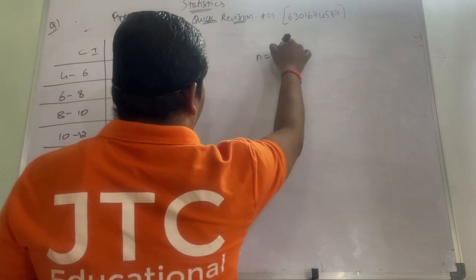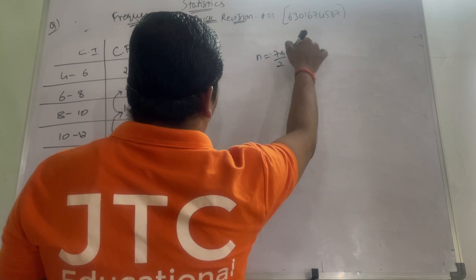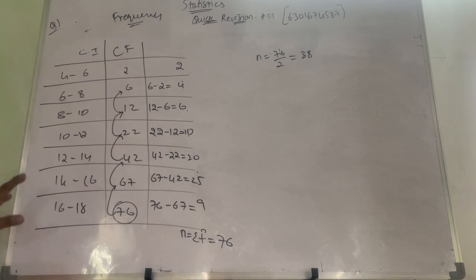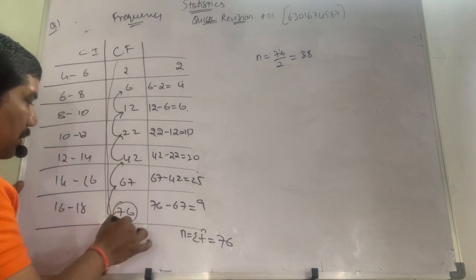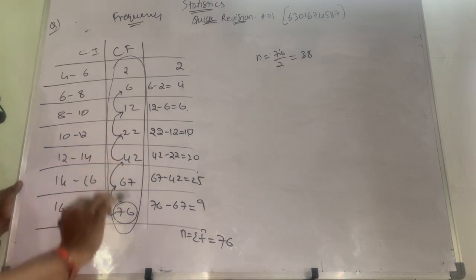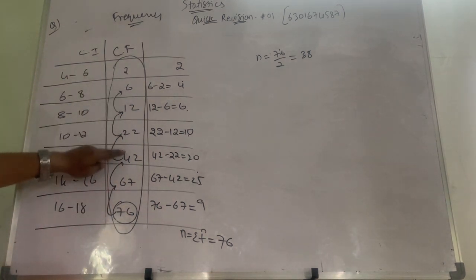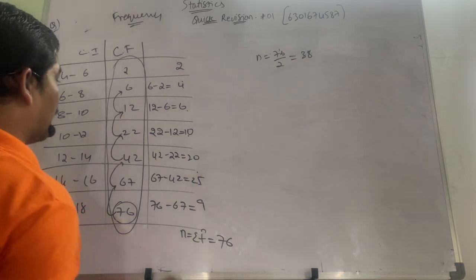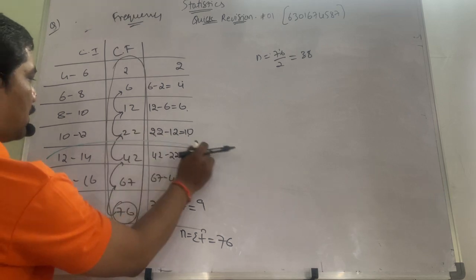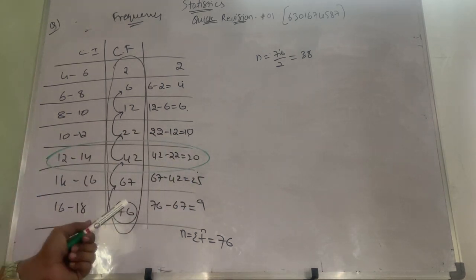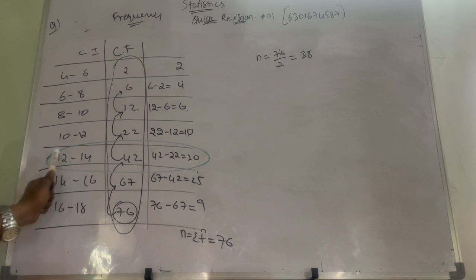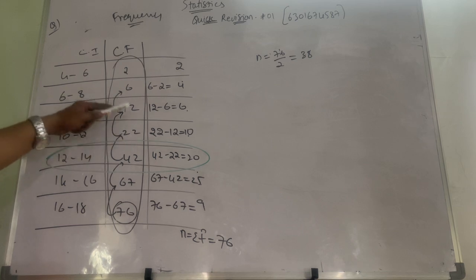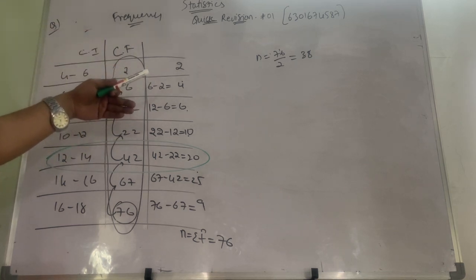Now again, same process. N by 2. 76 by 2. That is how much? 38. So now you see, here in this list you see now, because you always should check cumulative frequency. Which number is bigger than 38? First, bigger than 38 is 42. So this is your median class. Now this is your median class. You know, L value, H value, F value, CF value will be this, preceding class. Median class ke upar wale value ko CF lena hai. So this is CF, this is F.